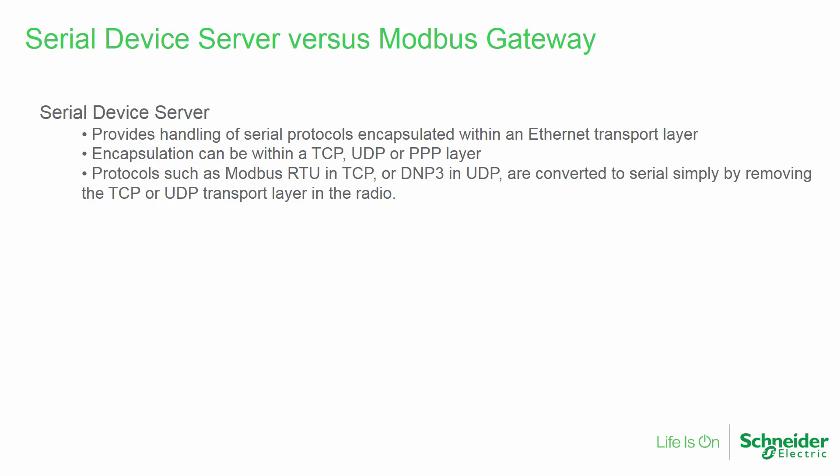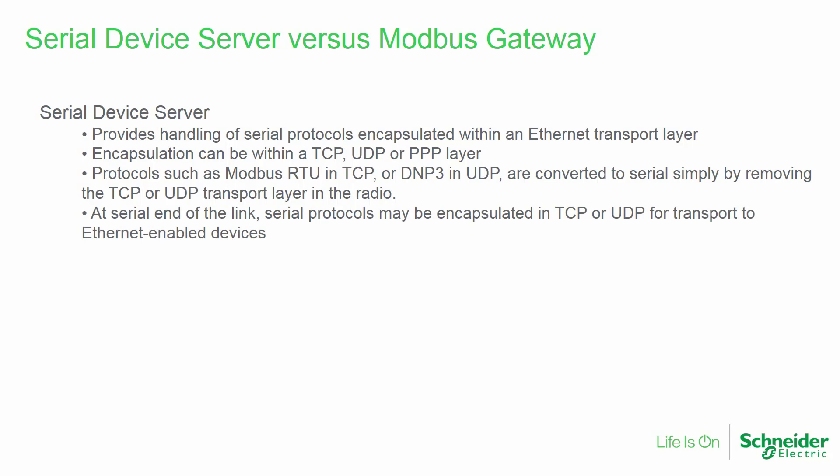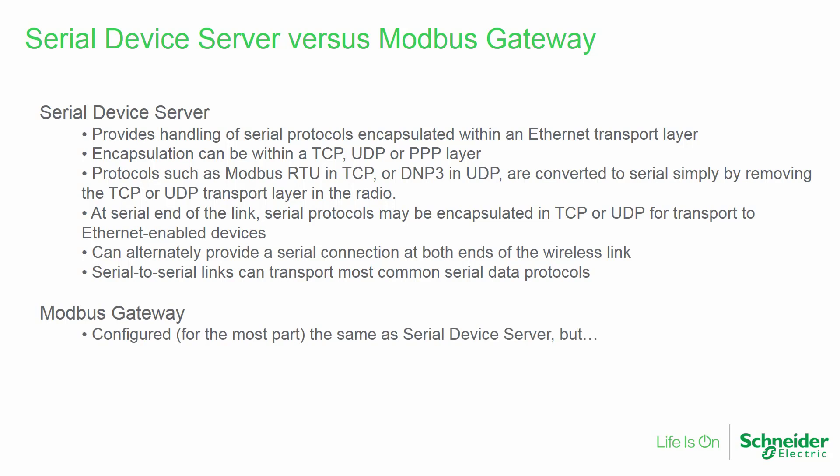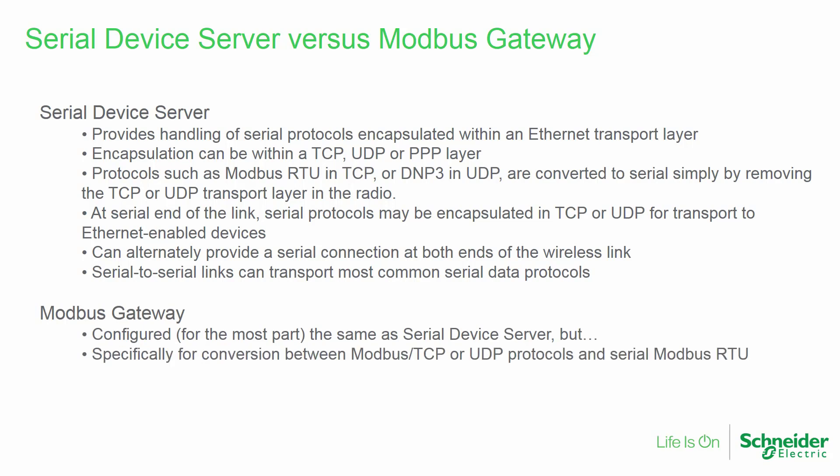Protocols such as Modbus RTU in TCP or DNP3 in UDP are simply converted to serial by removing the TCP or UDP transport layer within the radio. At the serial end of the wireless link, serial protocols may be encapsulated in TCP or UDP for transport over the air to Ethernet-enabled devices. It is also possible to provide a serial connection at both ends of the wireless link, and these serial-to-serial links can transport most common serial data protocols. The Modbus gateway mode is configured for the most part the same as serial device server mode, but is specifically used for conversion between Ethernet protocols called Modbus TCP or Modbus UDP and the serial Modbus RTU protocol. The Modbus gateway mode may also be used to transport serial-in, serial-out Modbus RTU messages.